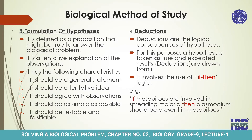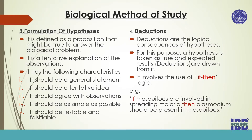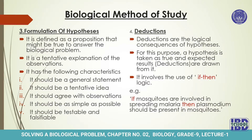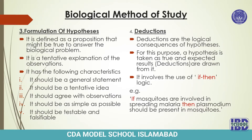Number three, it should agree with observations — meaning the hypothesis should be based upon the observations taken in the second step. Number four, it should be as simple as possible. Number five, it should be testable and falsifiable. You can test a hypothesis through experimentation and by analyzing the results. The hypothesis can then be rejected or accepted.